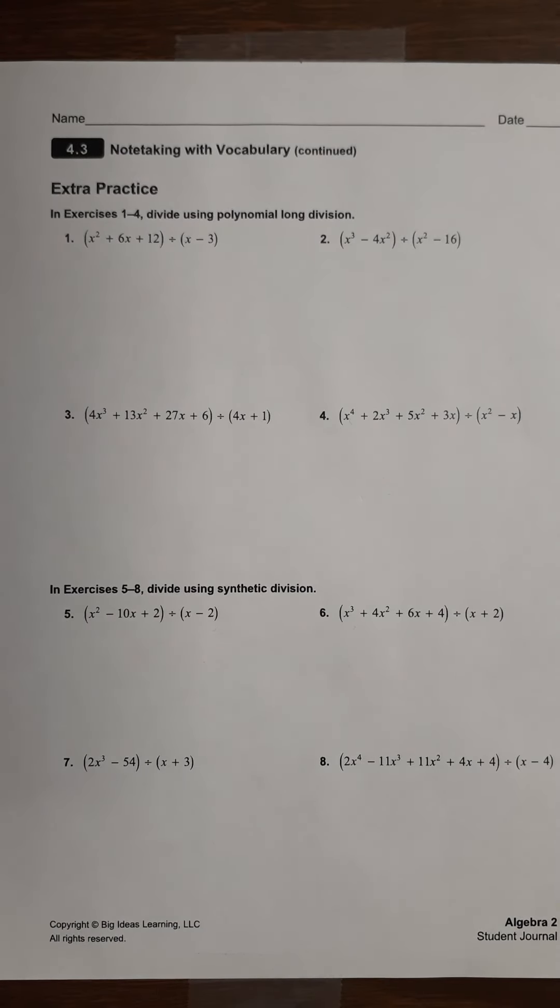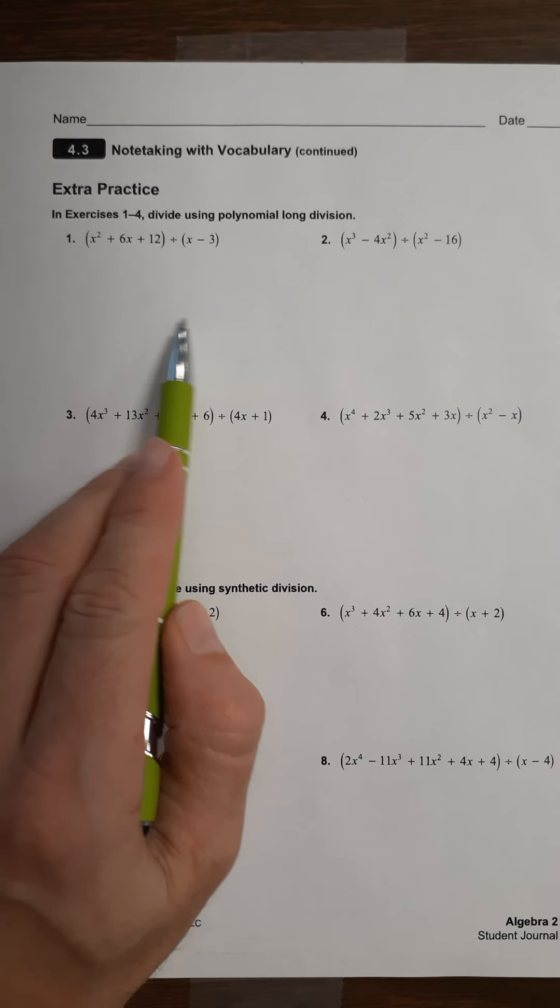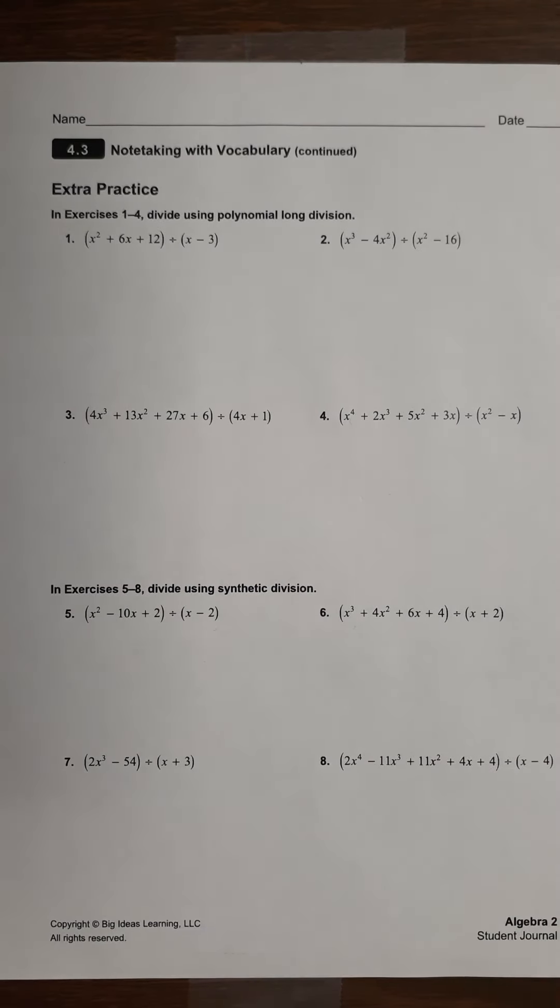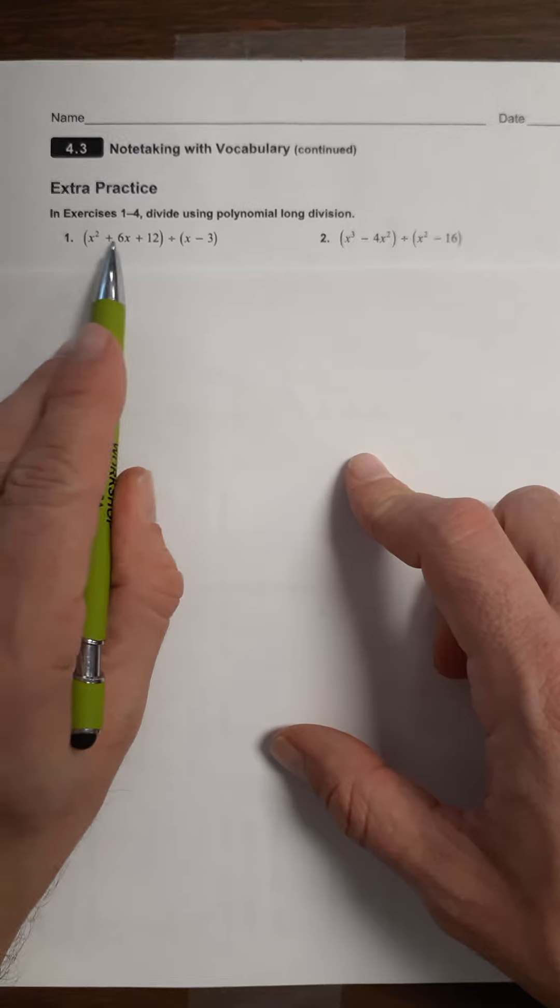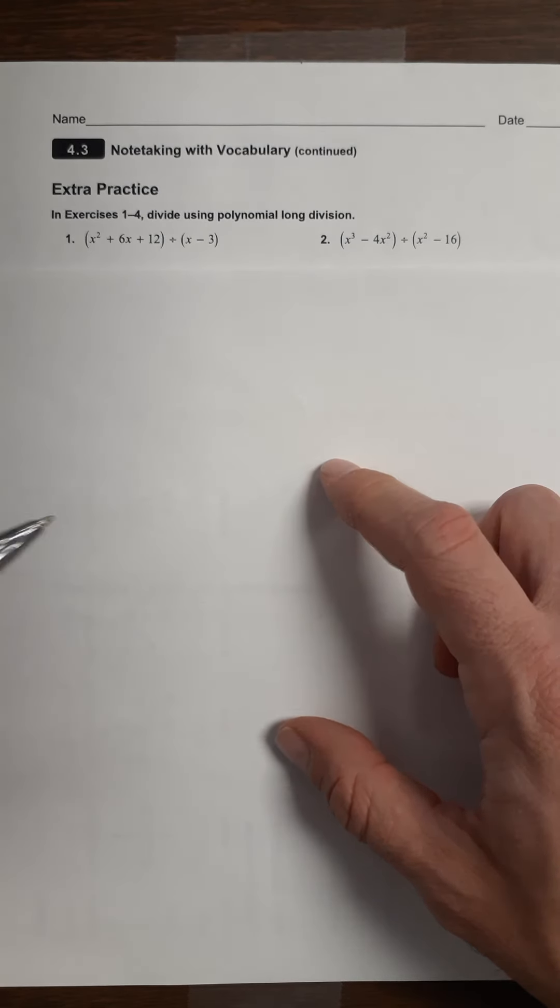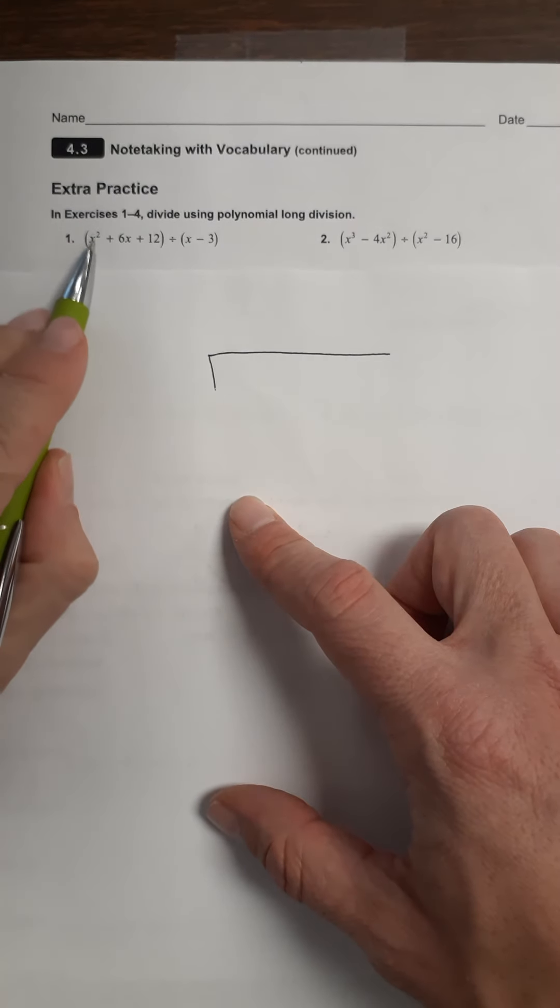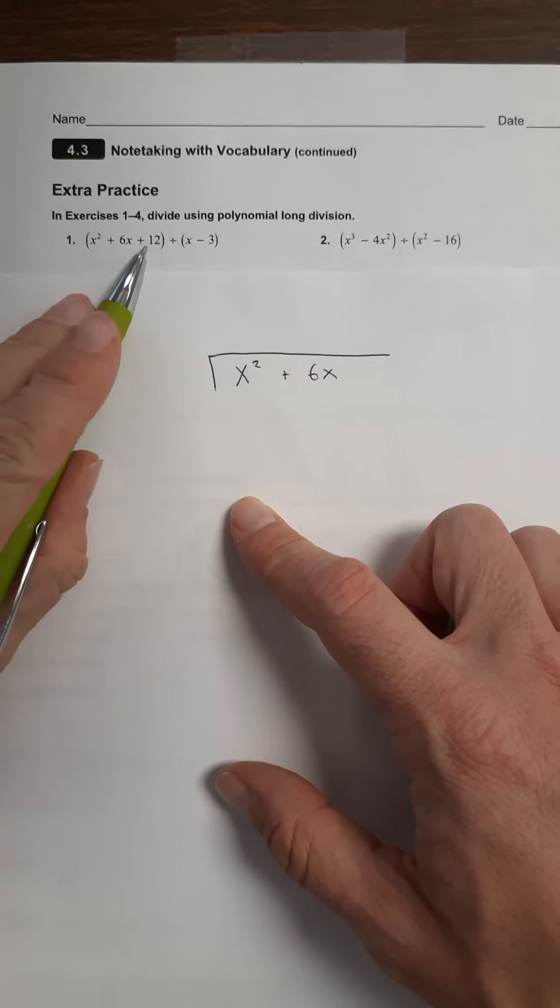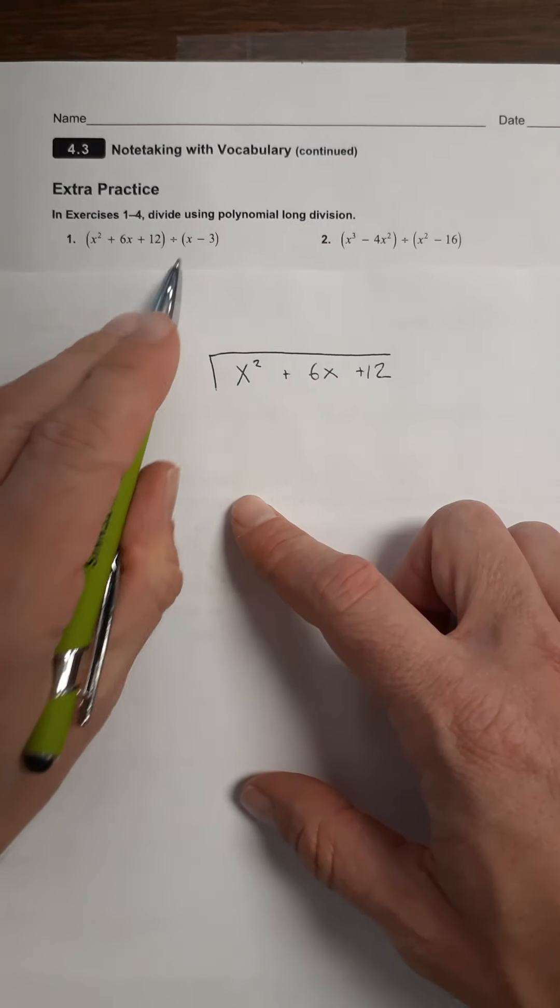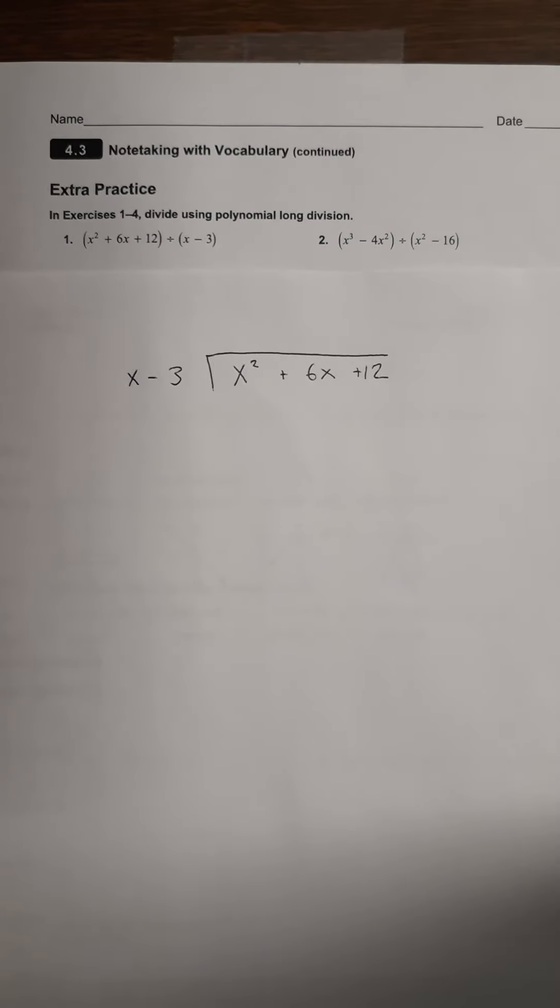So you are now on page 89 of your student journal. There's a fair amount of work here, but if you write really small, go ahead and use this area. If you don't write really small, just get another piece of paper out. Get a notebook out and do it on there. So let's do problem number one. We're going to try to use those long division ideas for polynomials. So this is the bigger one divided by this. So this is going to go underneath the division sign. Actually, I'll just do it like this. So I've got x squared plus 6x plus 12, and then we're going to divide that by x minus 3.